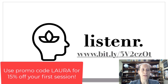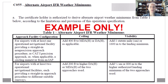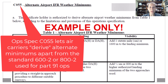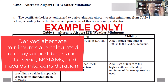Let me tell you about derived alternate minimums. This is where Part 121 operators can use OPSPEC C55. Here's an example for figuring out alternate minimums that are unique to that airport, that wind, the NOTAMs. We're going to go through those examples today and how to actually do that.